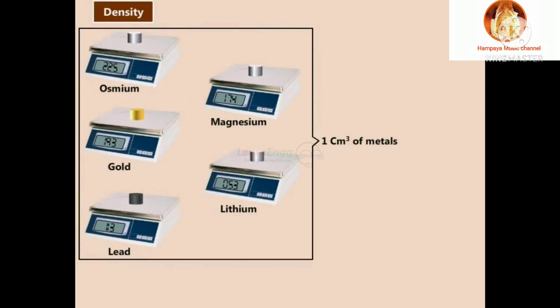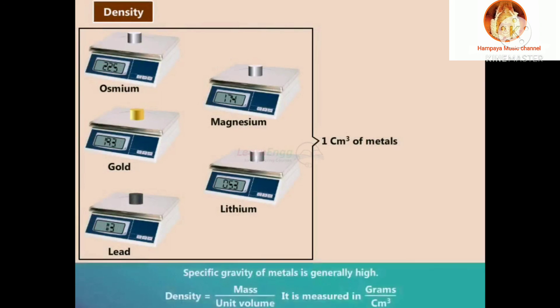Density: Here we are seeing a one centimeter cube of metals. The specific gravity of metals is generally high. Density is equal to mass per unit volume, and it is measured in grams per centimeter cube.